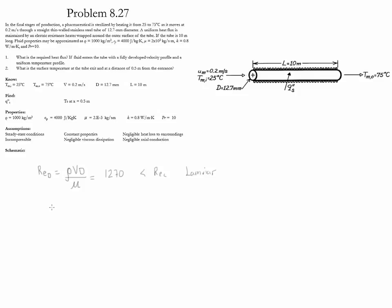Now we need to determine whether we are in the fully developed region or the entrance region. For laminar flow, the thermal entry length is x_fd,t = 0.5·Re·Pr·D. Using the values in this problem, we find it to be 8.06 meters. Since the outlet is at 10 meters, the flow is thermally fully developed at the outlet.